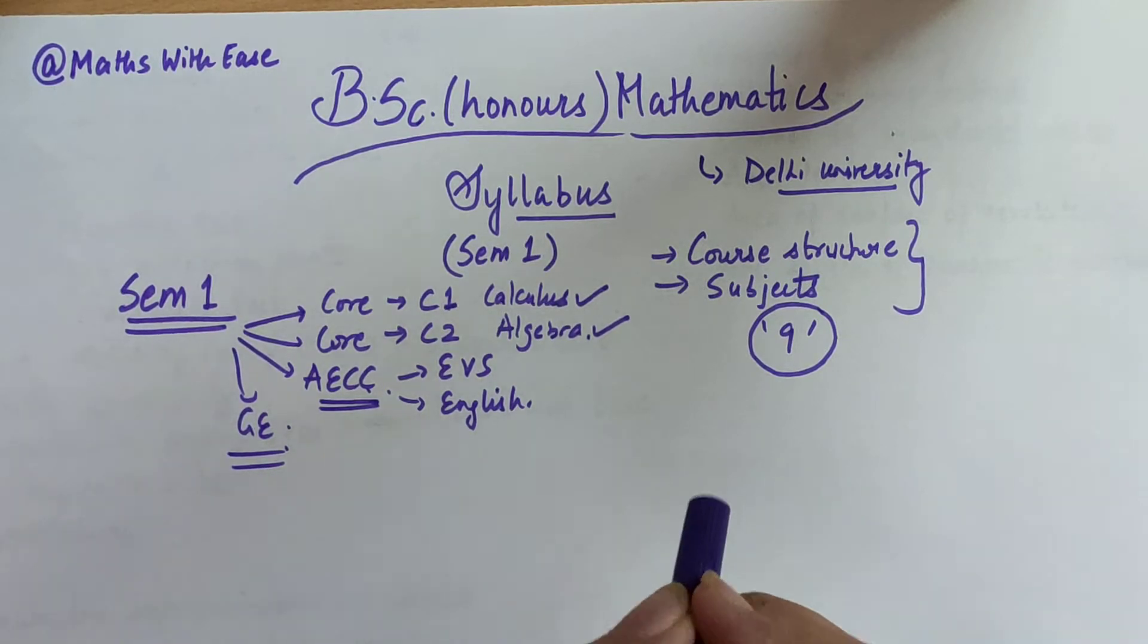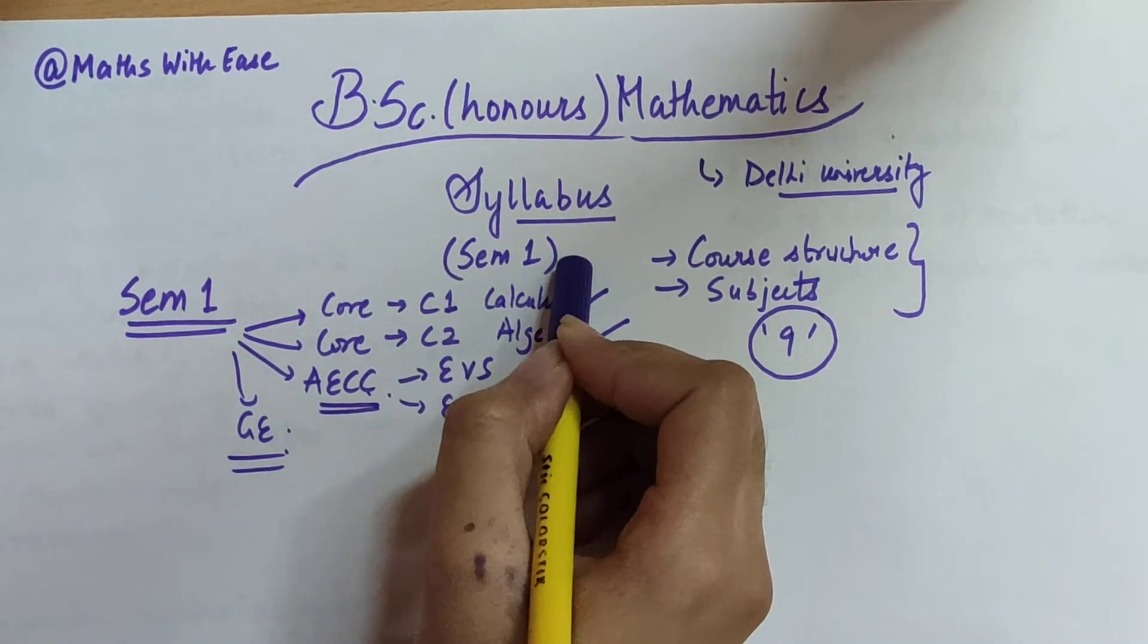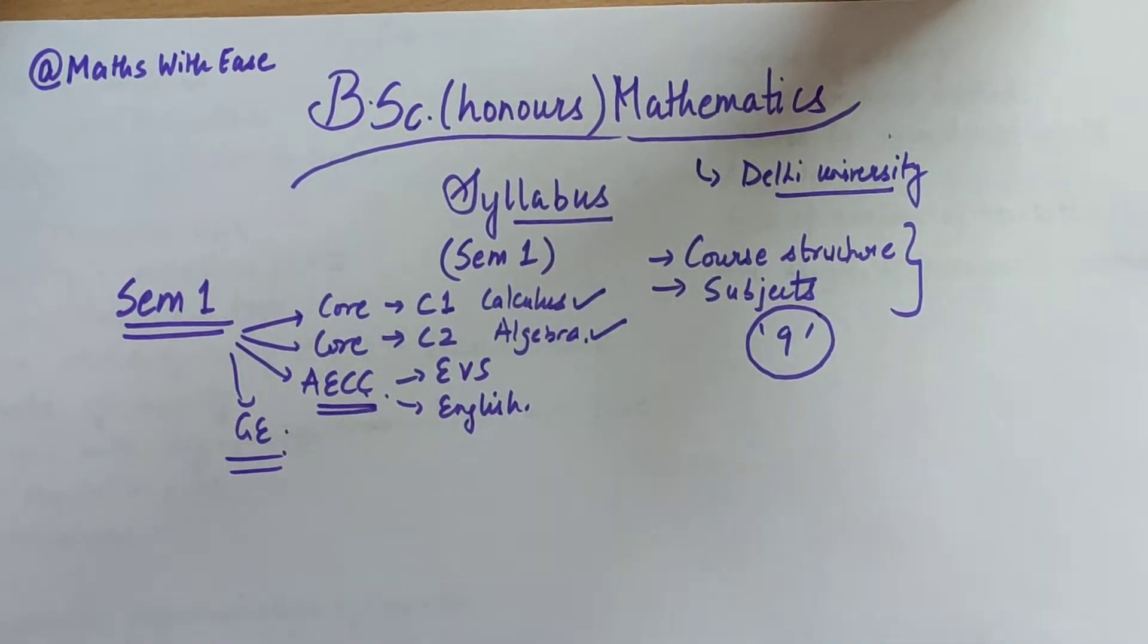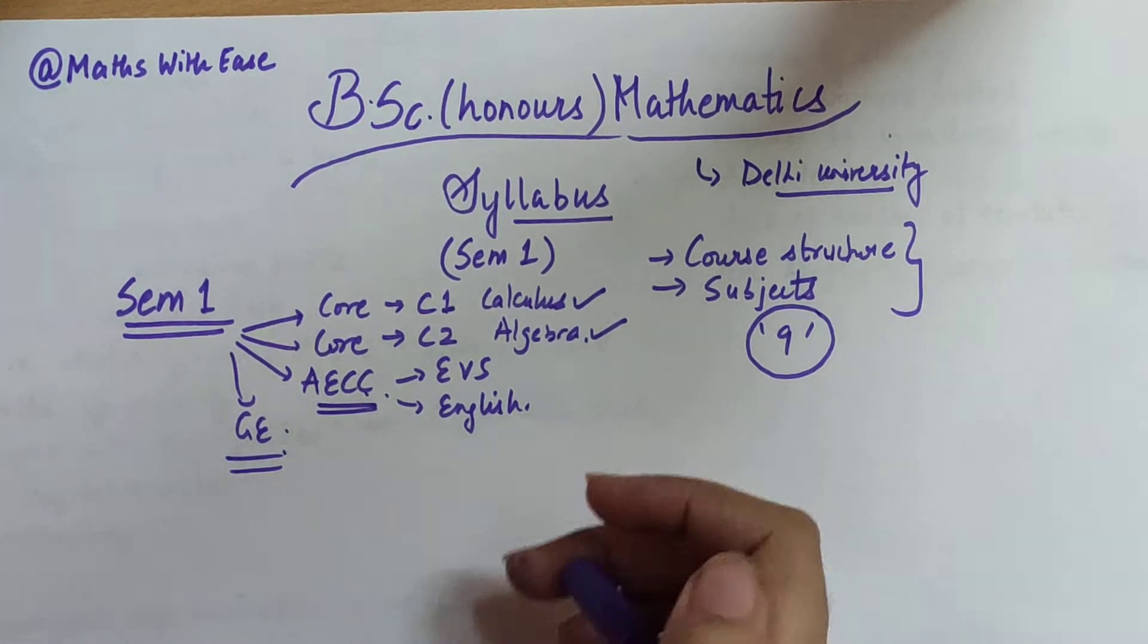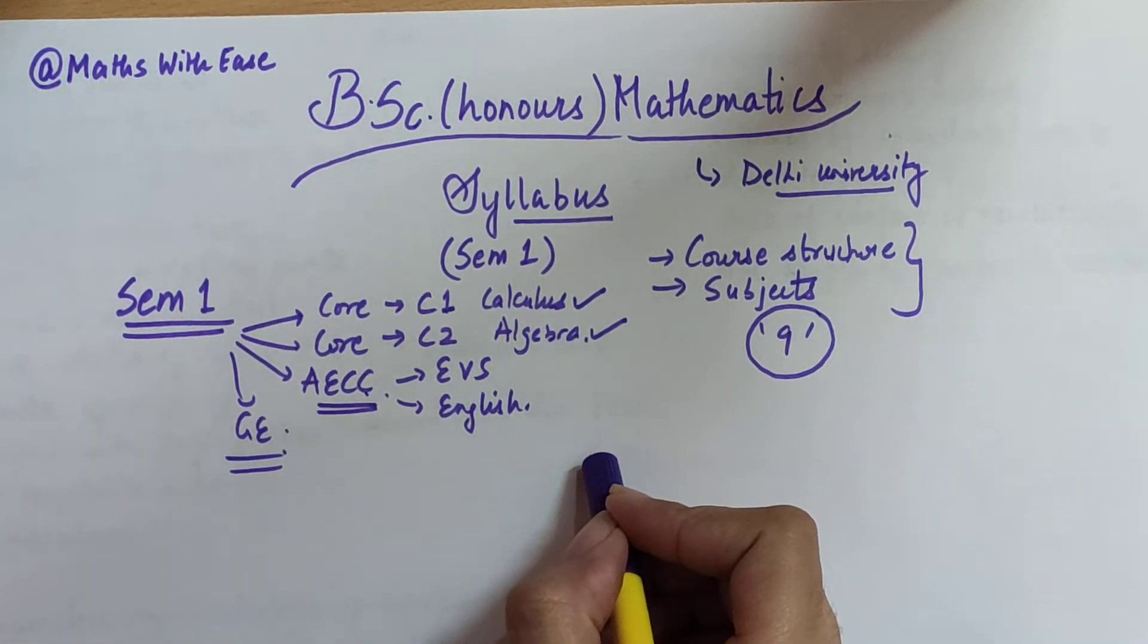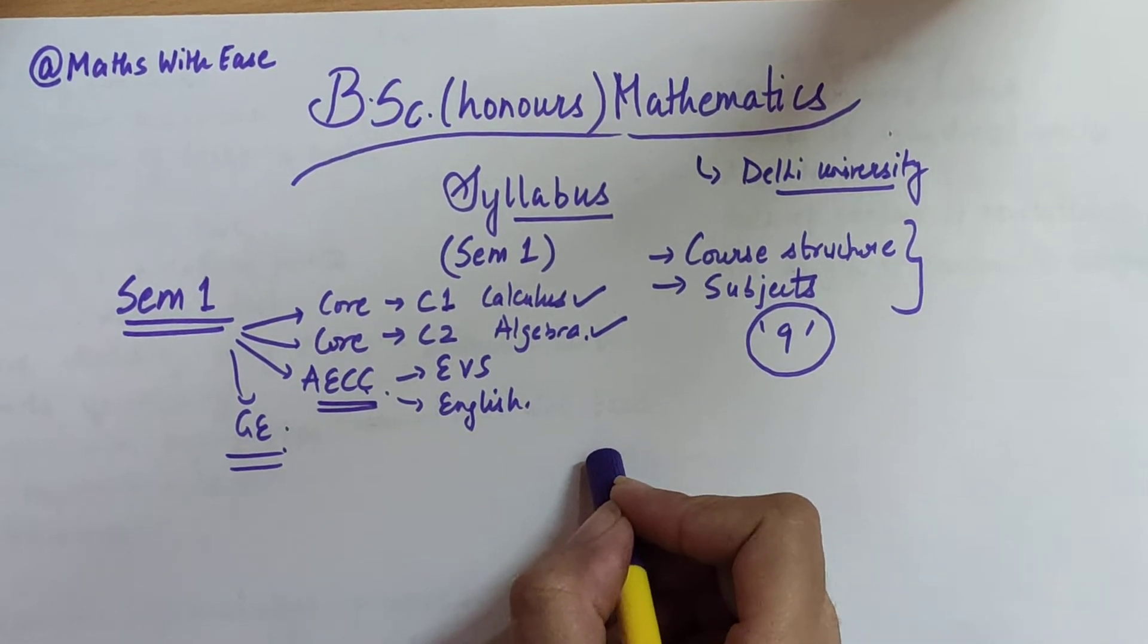The BSc Math Honours degree is a three-year course, and we'll discuss the syllabus in this video. In this video, I'm going to cover just the Semester 1 syllabus, and in the upcoming videos, I'm going to discuss the syllabus for the other semesters.